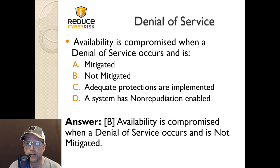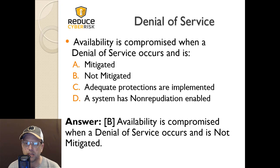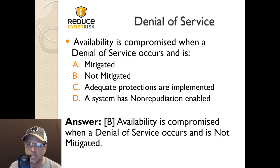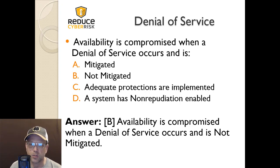Next question: Availability is compromised when a denial of service occurs and is — A) mitigated, B) not mitigated, C) adequate protections are implemented, or D) a system has non-repudiation enabled. The answer is B — availability is compromised when a denial of service occurs and is not mitigated.